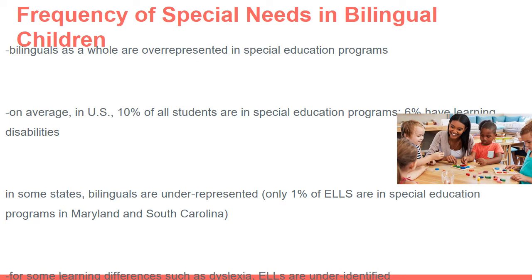Another type of learning difference, such as dyslexia, shows that ELL students are also under-identified. Many times schools are hesitant to test students for dyslexia because they consider it more of a language issue, or they misdiagnose the student's learning difference as a language difference rather than recognizing dyslexia.